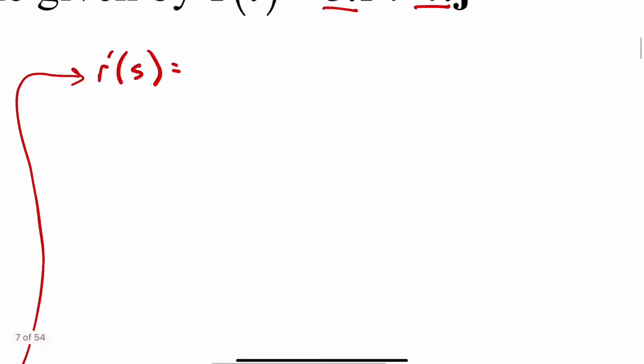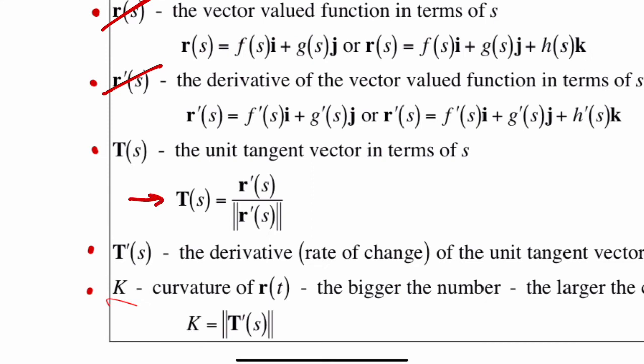Next we want to take the derivative of that. So r'(s) would be 3/5 comma 4/5. Next we're finding capital T(s), which is r'(s) divided by the magnitude of r'(s).